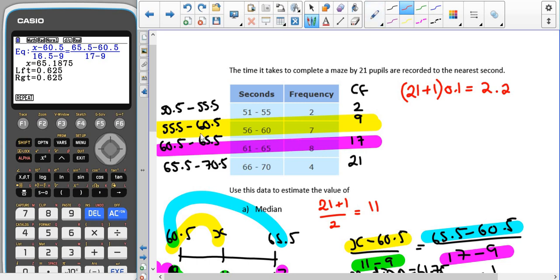It starts at 55.5, ends at 60.5. Lower is 2, the upper is 9, and we're looking for piece of data number 2.2.